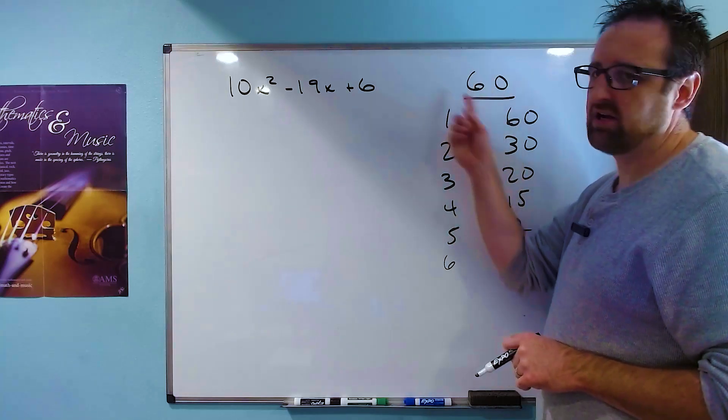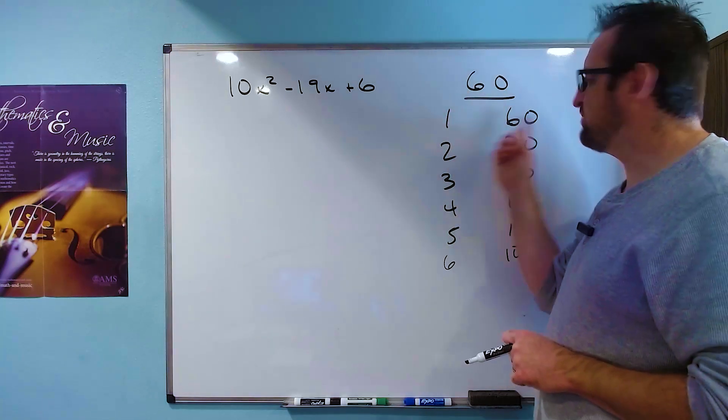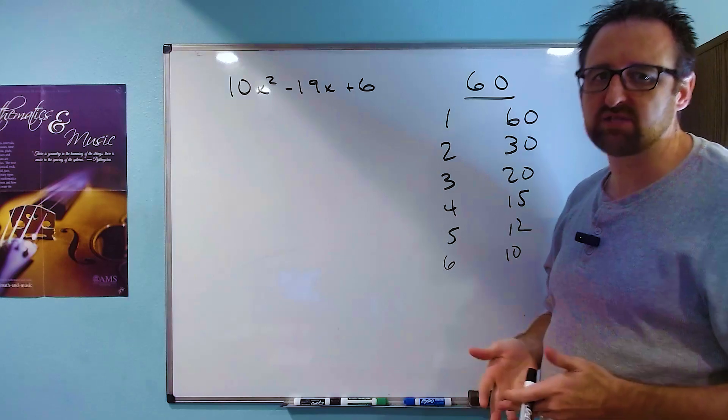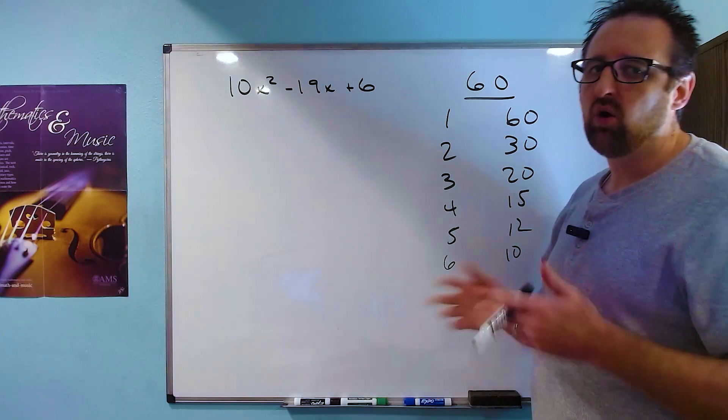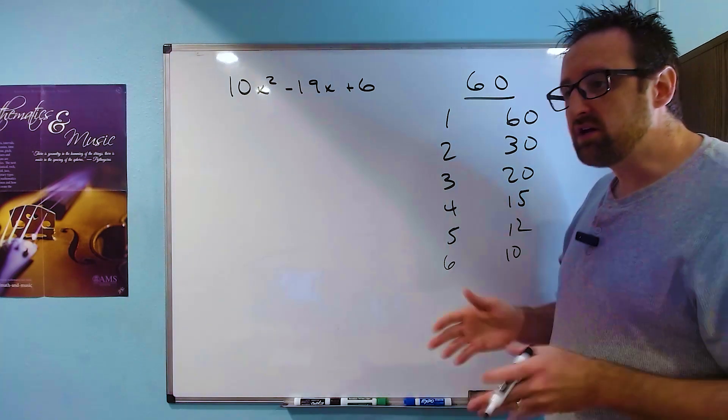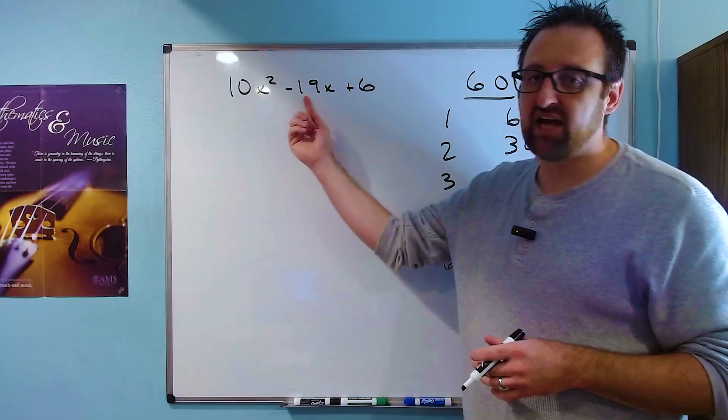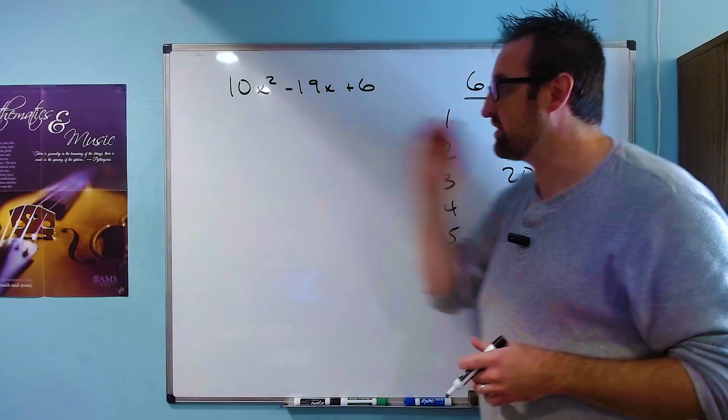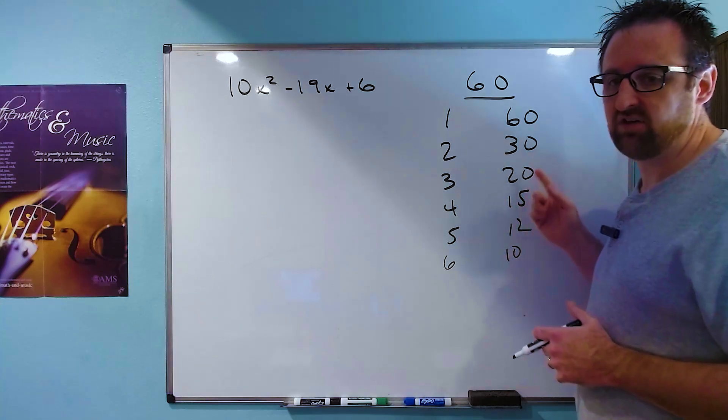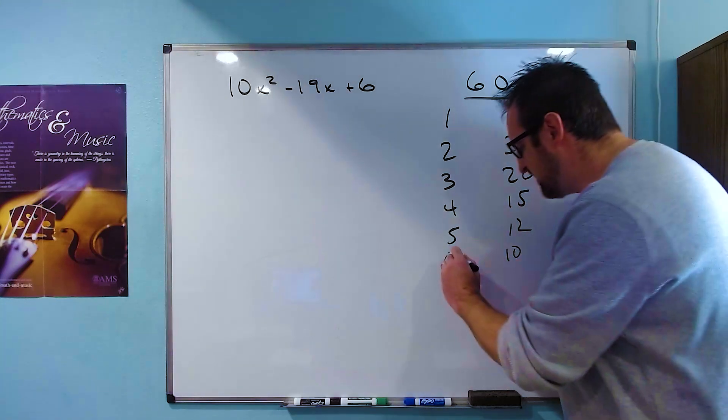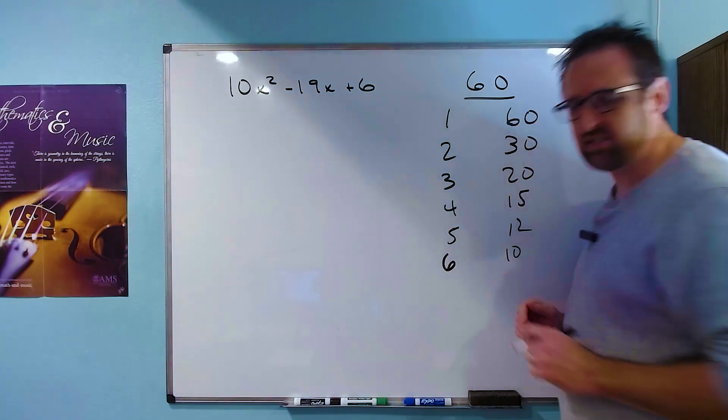In this case, the number up here is positive, so these pairs of factors have to have the same sign, either both positive or both negative. And what we're looking for is a pair of factors that adds to negative 19, this middle number here. Take a second and see if you can figure out which pair of factors we're looking for.